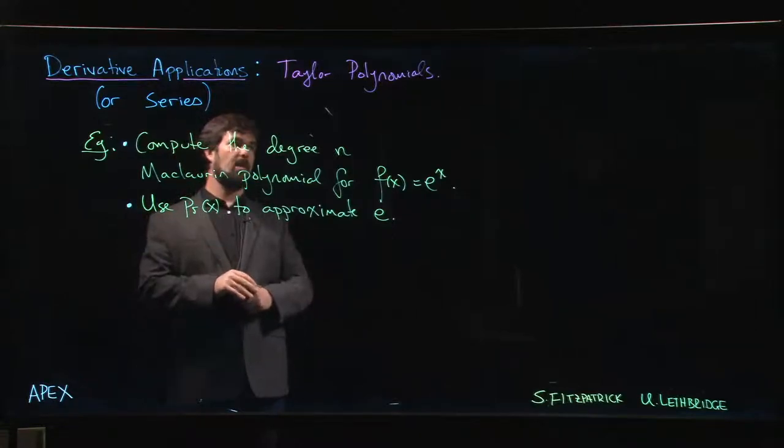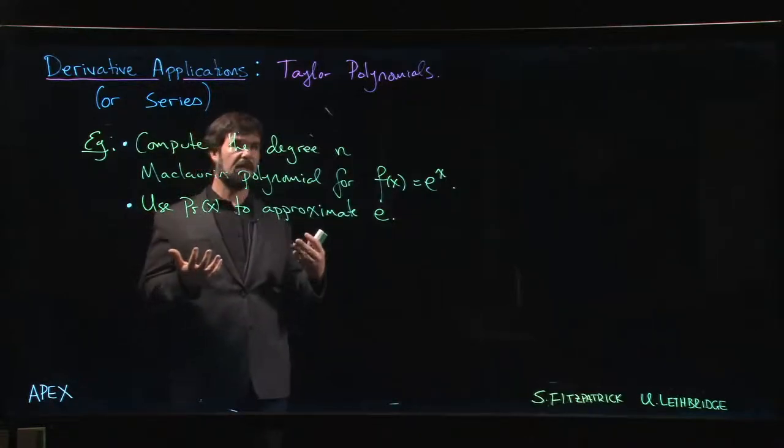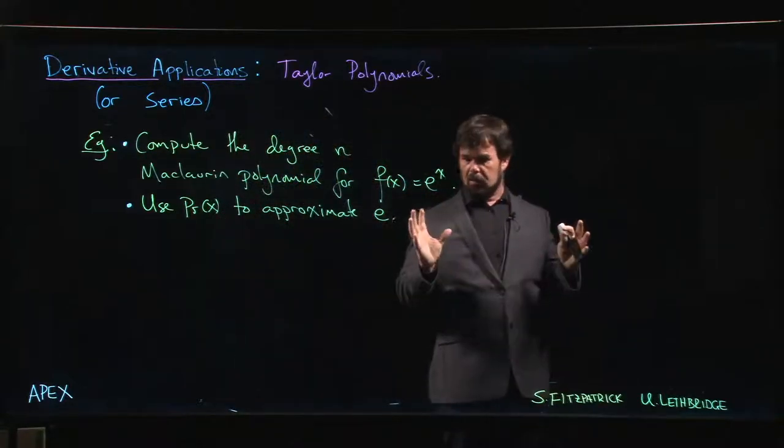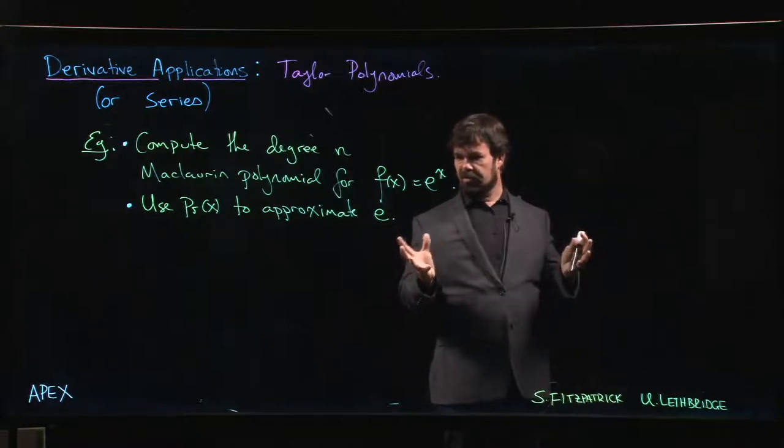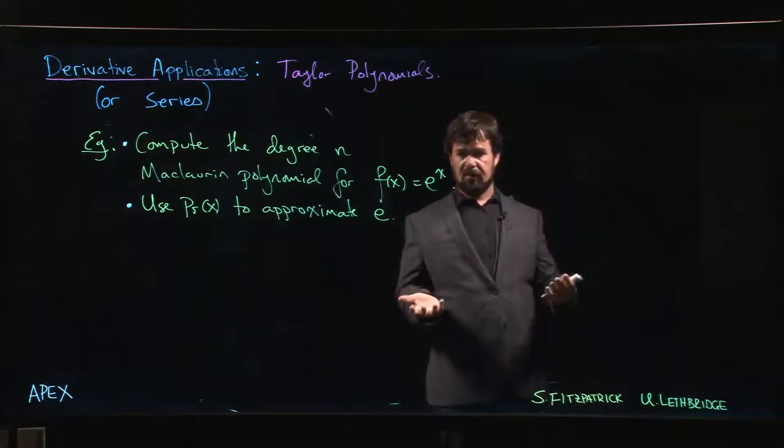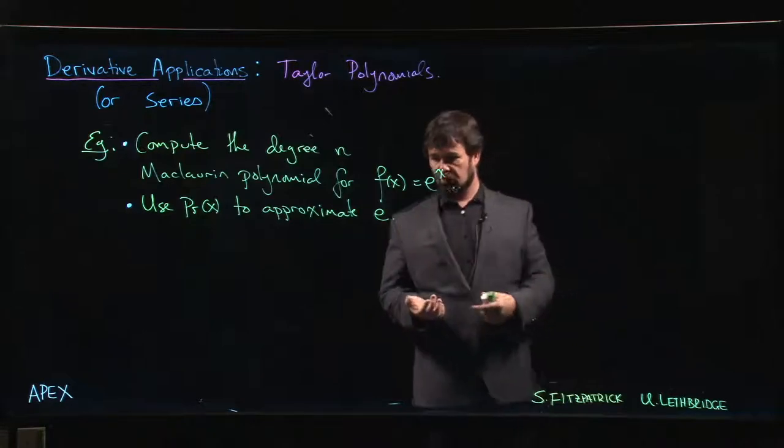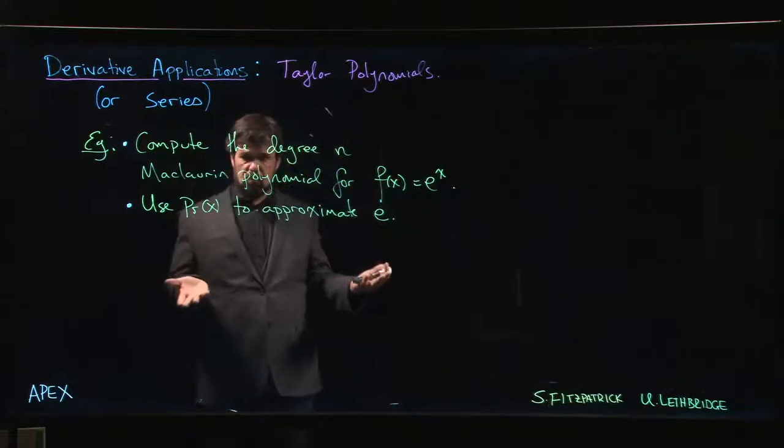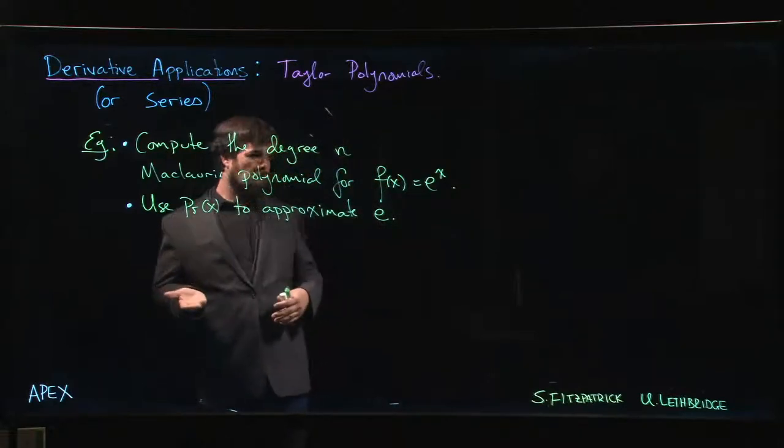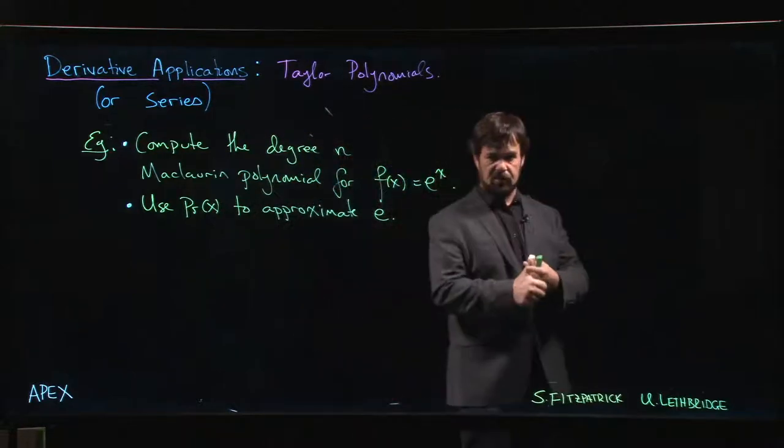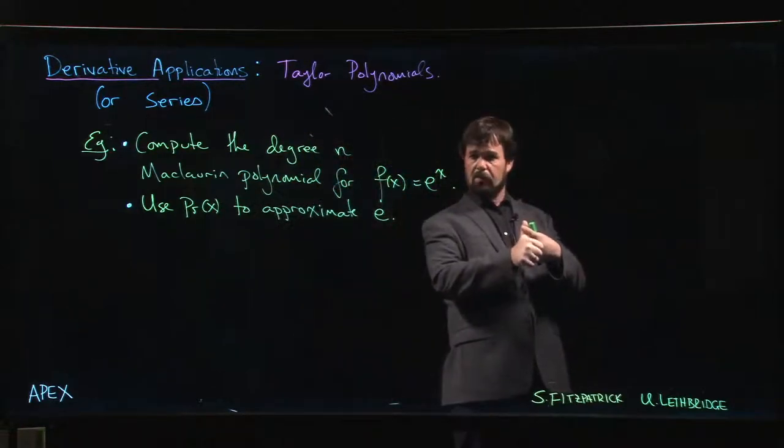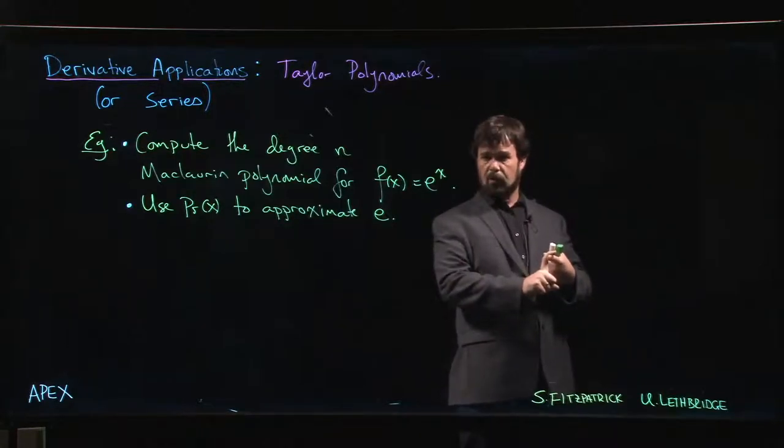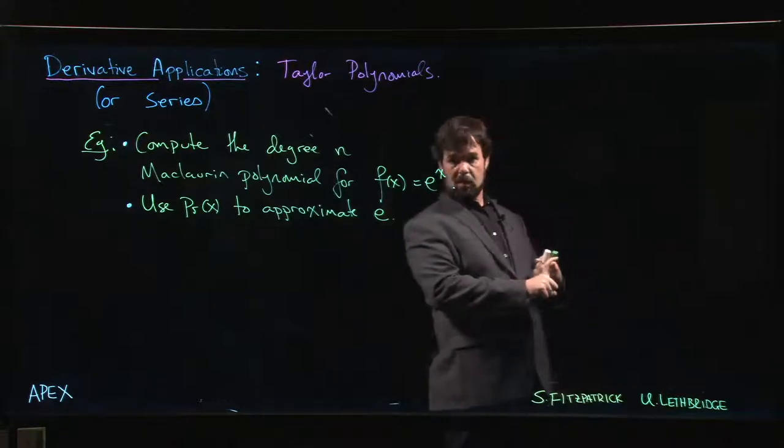The other is the reason that we care about Taylor polynomials. Functions like the exponential function—we tend not to think about this these days because we have calculators and computers that will give us the values of these functions for any x value that we want, for any degree of accuracy. We just get it from a machine. But there's the question of how do the machines come up with those values? How are they programmed to compute these things?